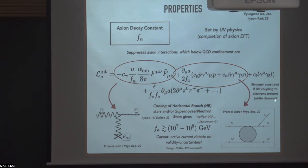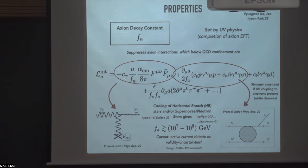There are significant uncertainties on these astrophysical bounds because they use environments such as supernovae and neutron stars, which carry large systematic uncertainties. However, it is clear that a bound exists around these scales; the precise value is more difficult to determine.